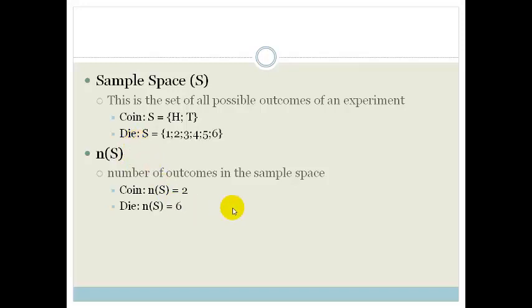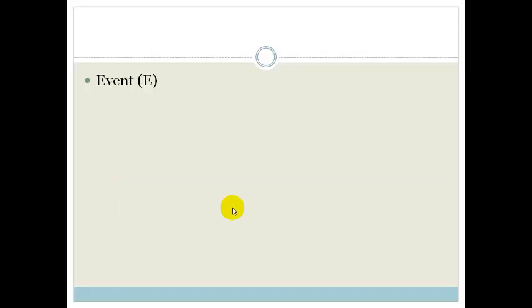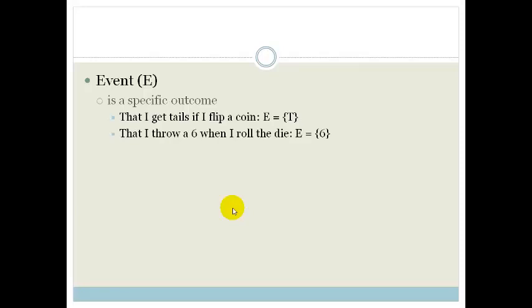Okay, not too bad. Right, let's look some more. An event is a specific outcome. In other words, if I am throwing a dice and I get tails when I flip that coin, that is a specific event. So an event is a specific outcome. Or if I throw a 6 when I roll the die, then that is a specific event. The event would be a 6. So a specific outcome of an experiment is called an event.